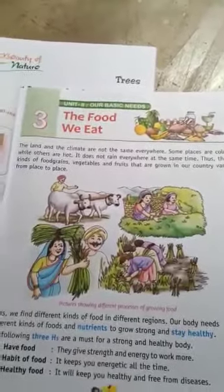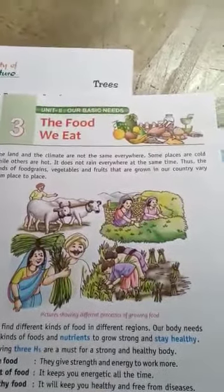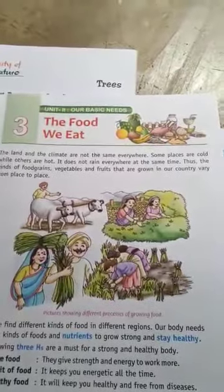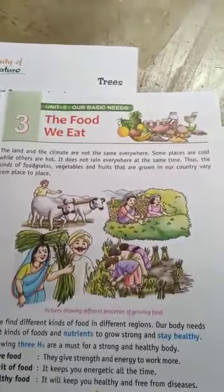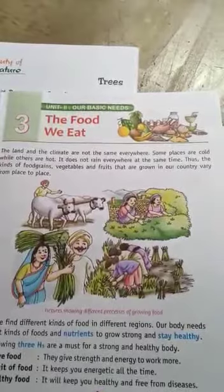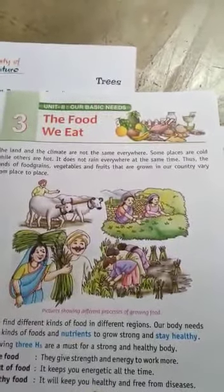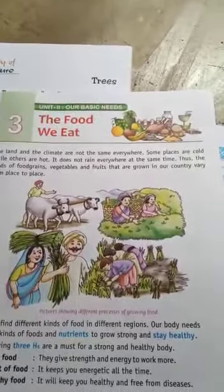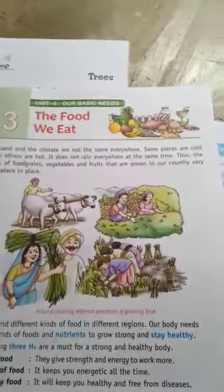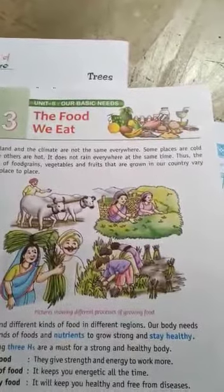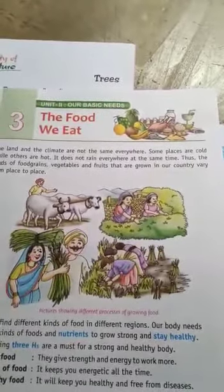The kinds of food grains, vegetables, and fruits grown in our country vary from place to place. In different places, we cultivate different things, and so our food habits become different. In our area, our staple diet is rice, whereas in the northern parts, their staple diet is wheat — roti or chapati.